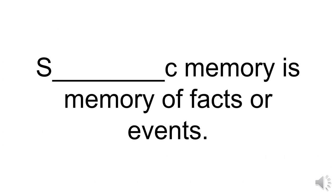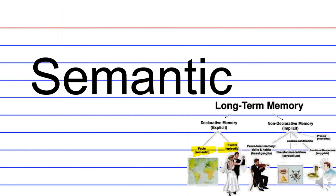S blank C memory is memory of facts or events. What type of memory recollects facts or events? That would be semantic memory.